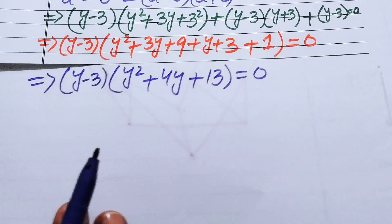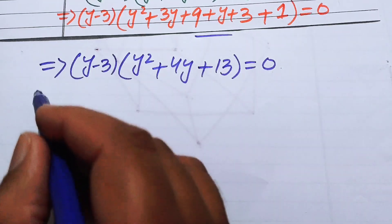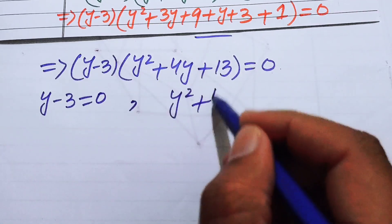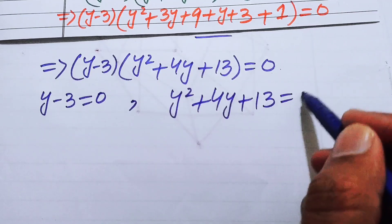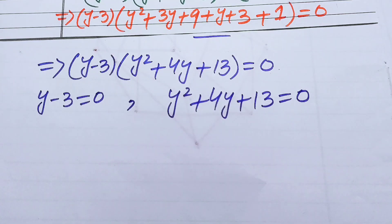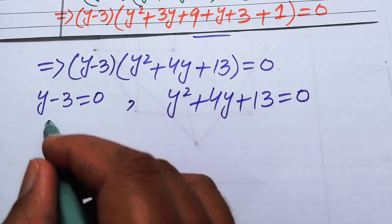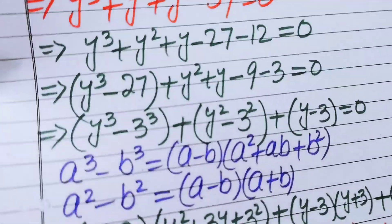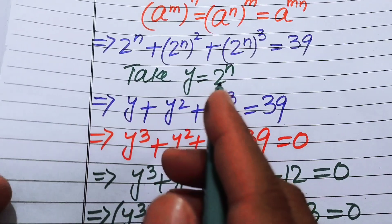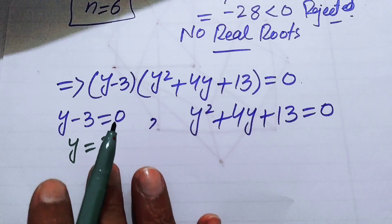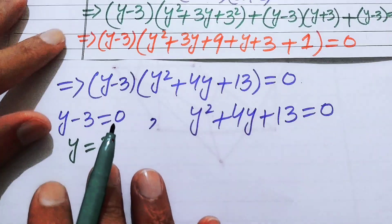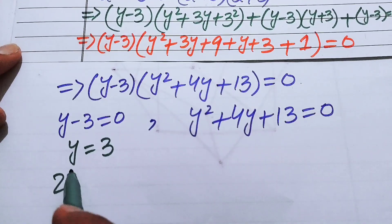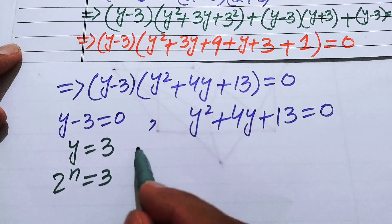We now have two cases. Case 1: y minus 3 equals 0, giving y equals 3. Since we defined y equals 2 to the power of n, back-substituting gives 2 to the power of n equals 3.